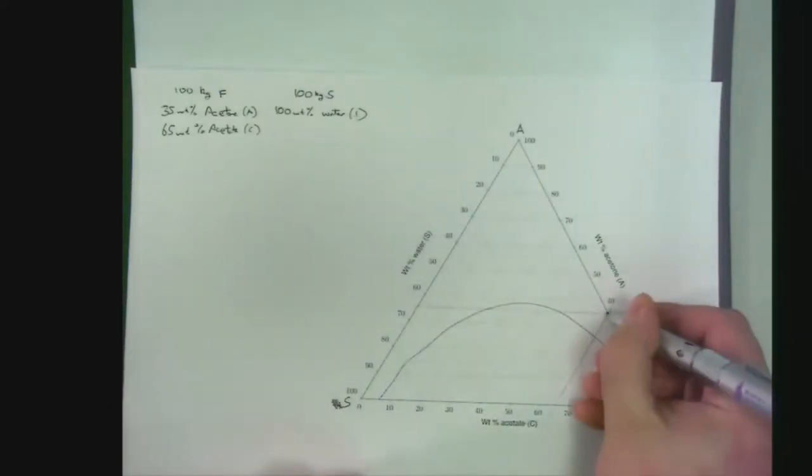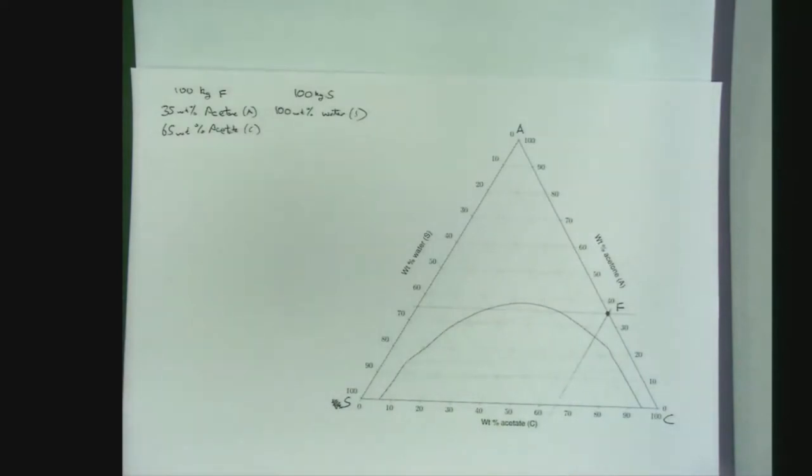So we can locate our feed point. Now our solvent is 100 kilograms of water - pure water - therefore it just lies in our pure solvent corner.